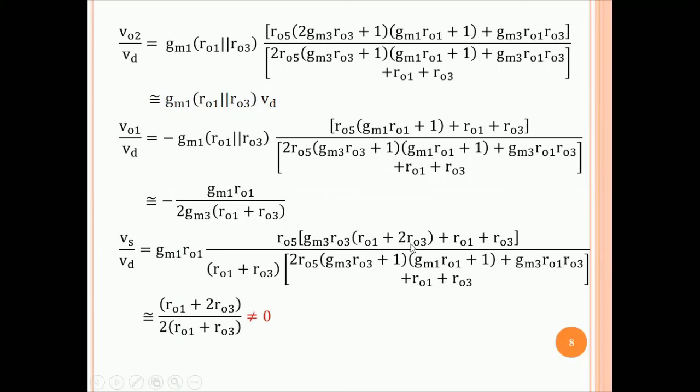This is Vs. Vs is this big expression, which approximates to RO1 plus 2RO3 by 2 times RO1 plus RO3. Interestingly, or maybe not interestingly, it is not 0. Not interestingly, because the circuit is no longer symmetric, and therefore one would expect that this will not be 0. And it turns out that it is not 0. In fact, it is closer to 1 than 0. So, Vs is not 0 when the load is a current mirror load.